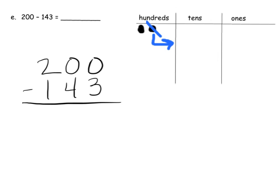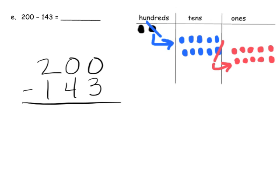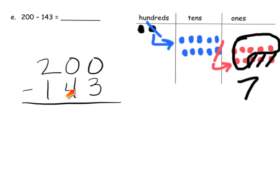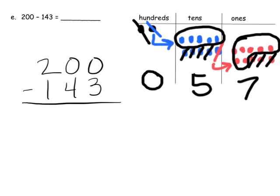We're going to unbundle this 100, which gives us 10 tens. And then we're going to unbundle this 10, giving us 10 ones. So now we can do our subtracting. Take away 3 ones: 1, 2, 3 — that leaves us with 7. Then take away 4 tens: 1, 2, 3, 4 — that leaves us with 5. Then take away 100, and that leaves us with no 100s. We don't need that zero there — we just leave it blank. So the answer is 57.